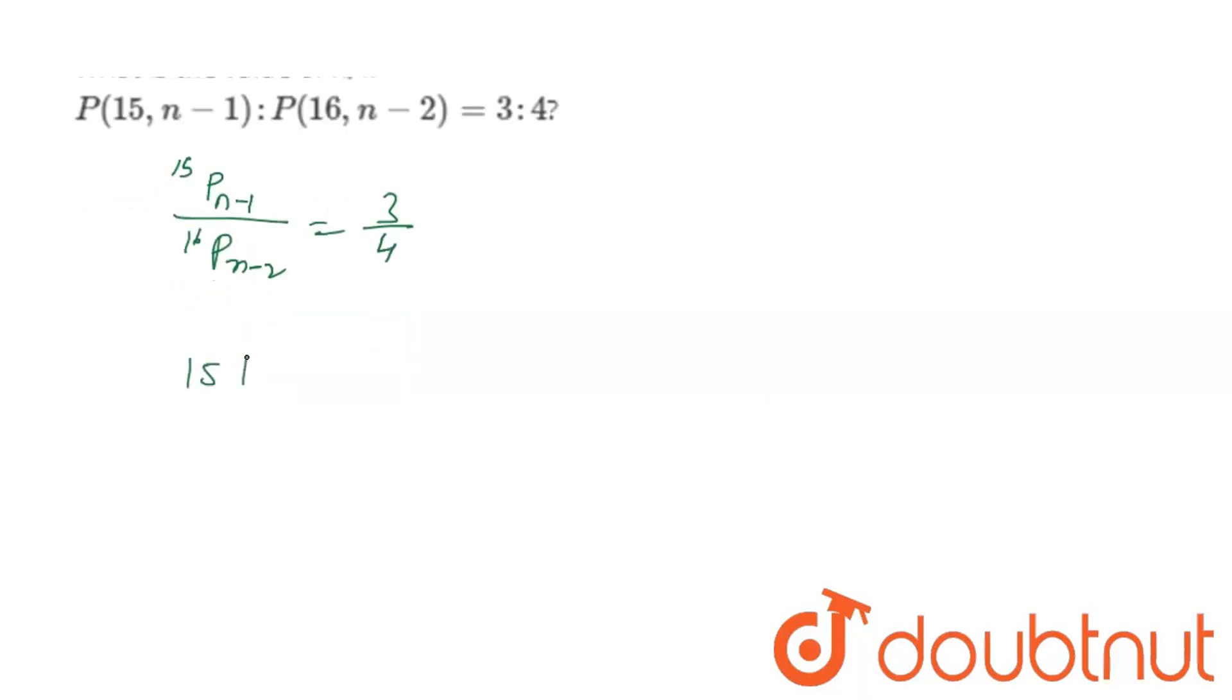What can I do? 15 factorial by 15 minus n-1. When I do this I will reciprocate. 16 minus n-2 by 16 factorial is equal to 3 by 4.